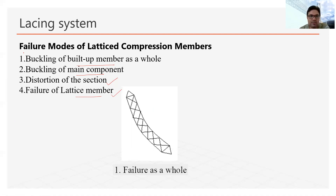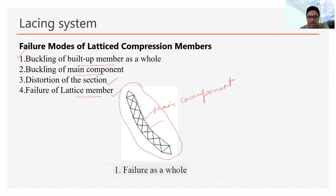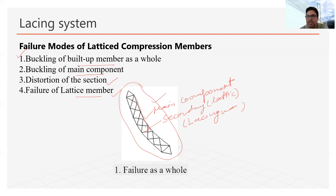Looking at the diagram: in the first case — buckling of the built-up member as a whole — you can see the whole system is buckling. The vertical lines represent the main components, and the cross members are the secondary or lacing members. In this mode, the entire member is buckling as one unit — that is the first type of failure.